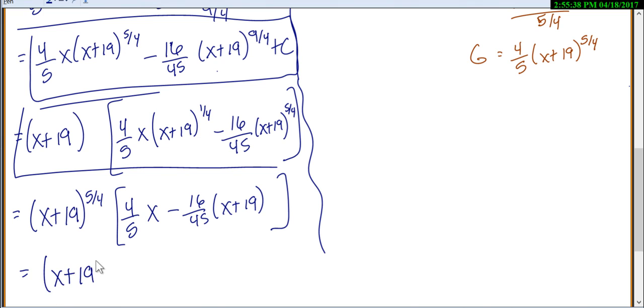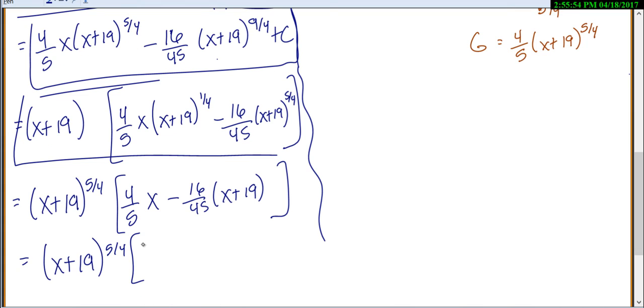So this is (x plus 19) to the 5/4 times 4/5 x minus 16/45. And that would probably be nicely simplified, unless you want to maybe try and factor out a 4/5. But at this point, we're kind of running out of ways to simplify. Lots of different ways you can simplify, just depending on who programmed it in, you might get any of these answers.